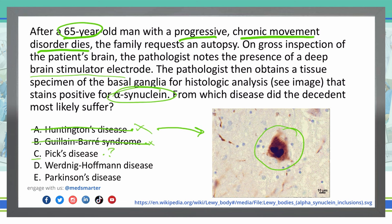Answer D: Werdnig-Hoffman disease. This is spinal muscular atrophy — autosomal recessive. We're not talking about anything associated with that, so D is already off my answer choice list.